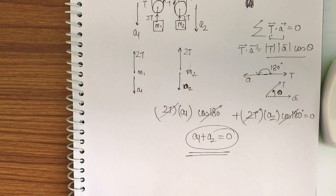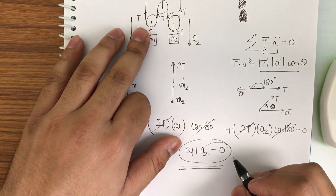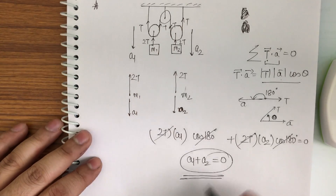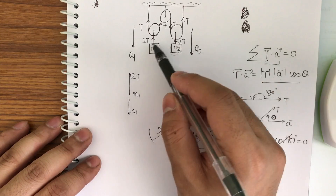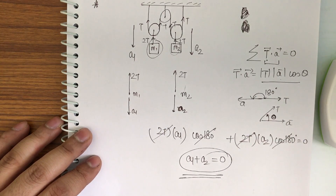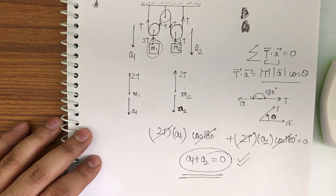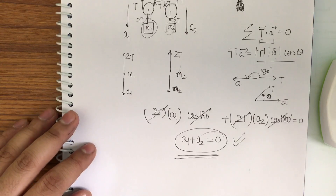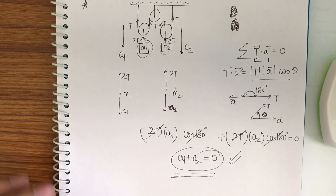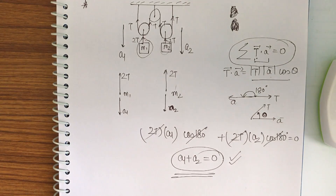This is the constraint relation we are getting. From the free body diagram of M1 we get one equation, and from M2 we get a second equation, but we have two equations and three variables: T, A1, A2. So it is not possible to solve without the constraint relation. That is why we need it — and this is one of the easiest questions that can be asked. The main thing to remember is summation of T dot A equal to 0.